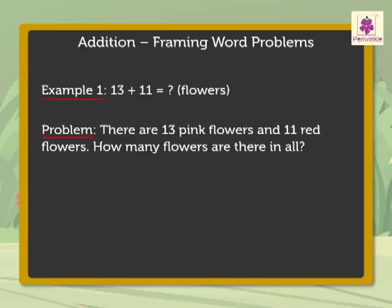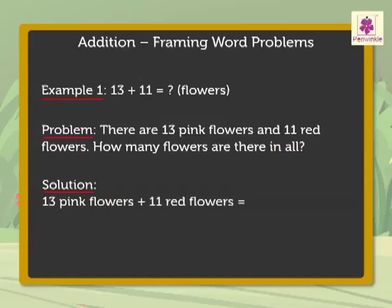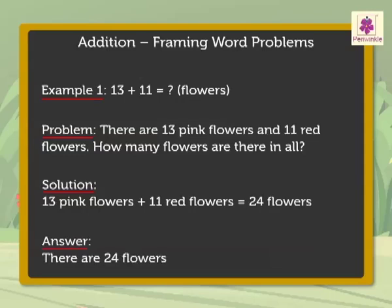Here, the words used to show addition are 'in all'. The solution is: 13 pink flowers plus 11 red flowers is equal to 24 flowers. So, there are 24 flowers in all.